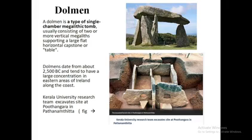A dolmen is a type of single-chamber megalithic tomb, usually consisting of two or more vertical megaliths supporting a large flat horizontal capstone or table. Dolmens date from about 2500 BC and tend to have a large concentration in eastern areas of Ireland along the coast. Kerala University's research team excavated sites at Putangara in Patanandita.